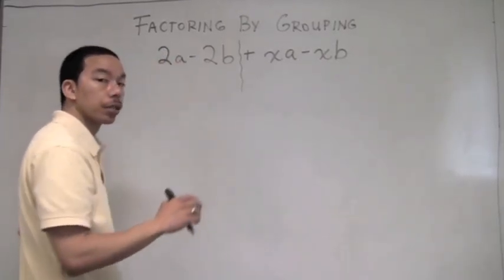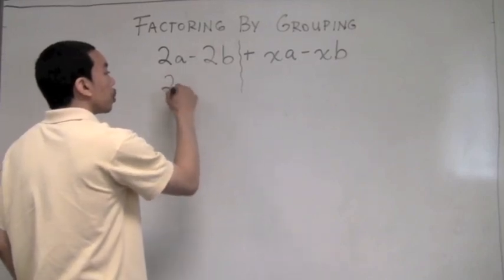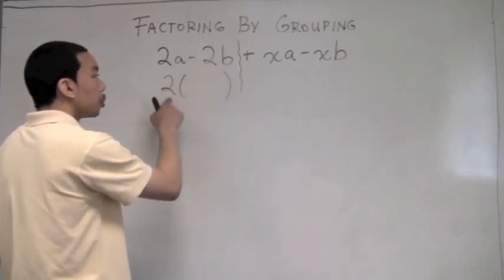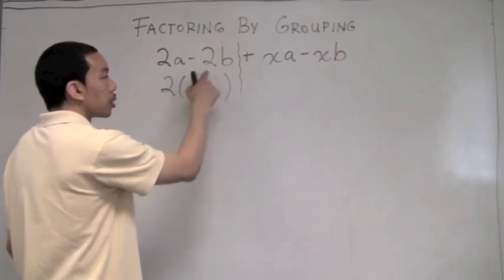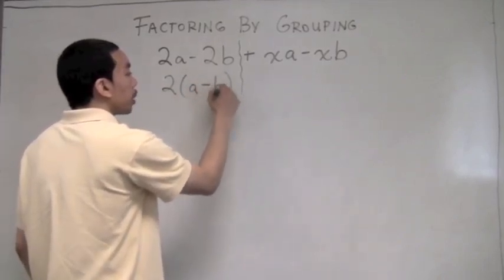So I factor out the GCF for the first two terms, which is 2. 2 goes into 2a, a times. 2 goes into negative 2b, negative b times.